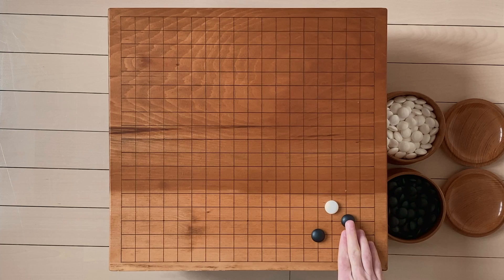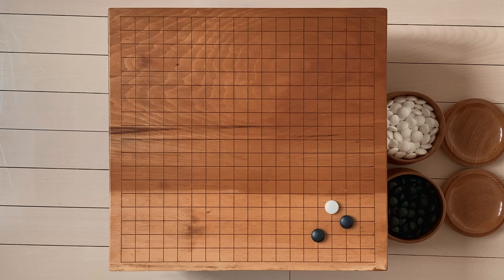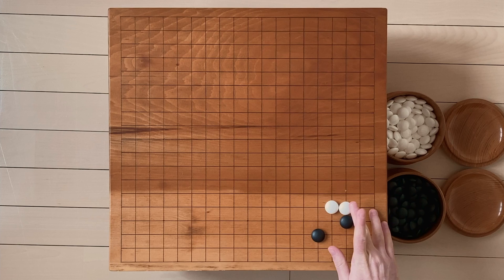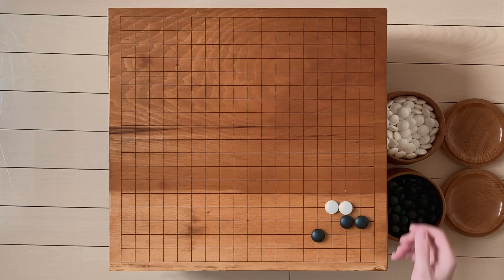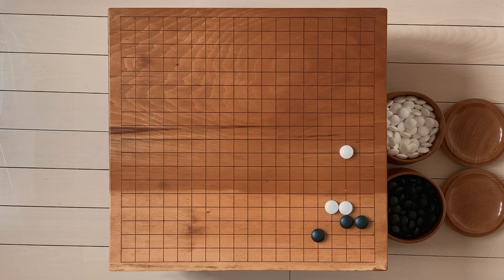So how do we continue this joseki? If you're white, what do you do? Did you block? If so, once again, points to you. This is the correct move here. Of course, black will descend so that white can't hane underneath and take away the corner. And then white plays lightly. He plays a three-point extension here. And you can see that white is kind of pushing black down into the corner.